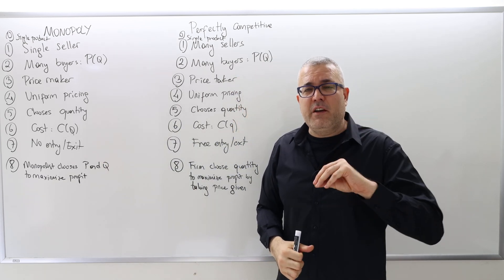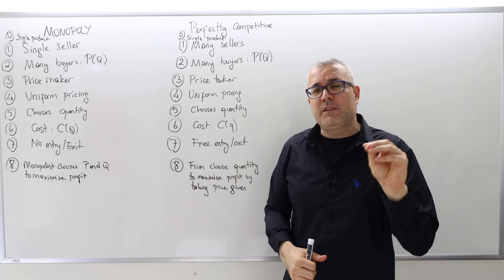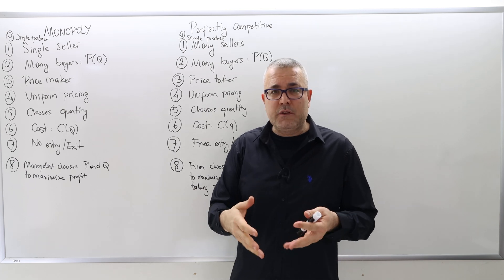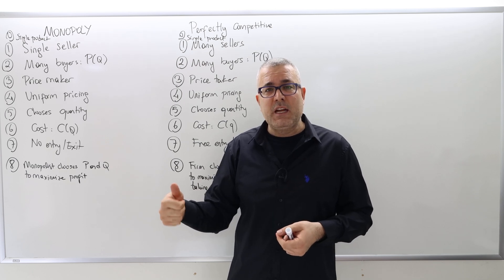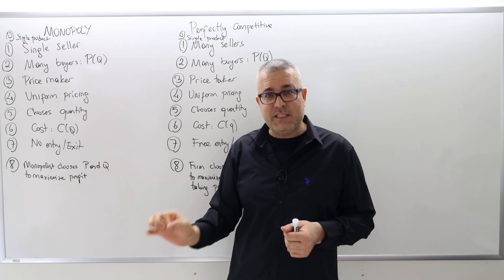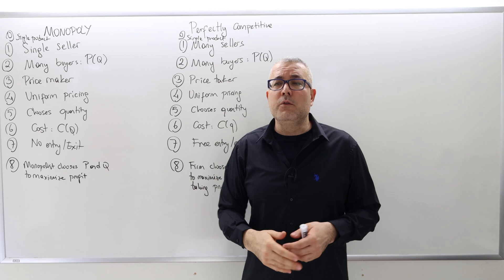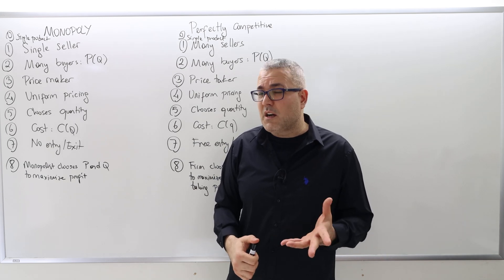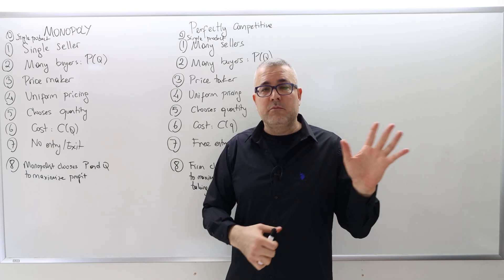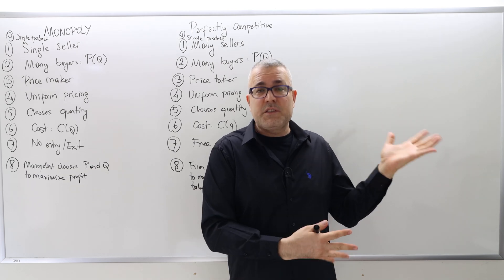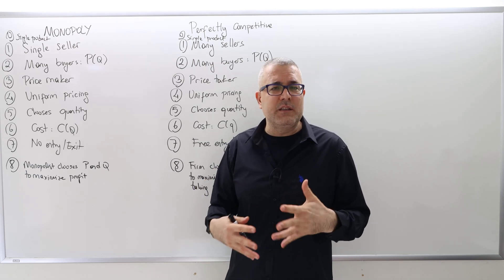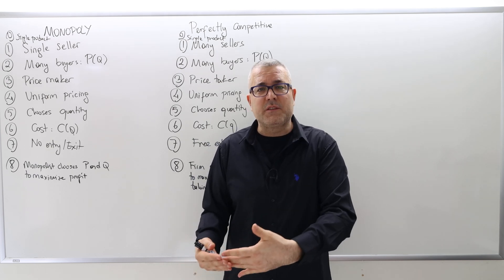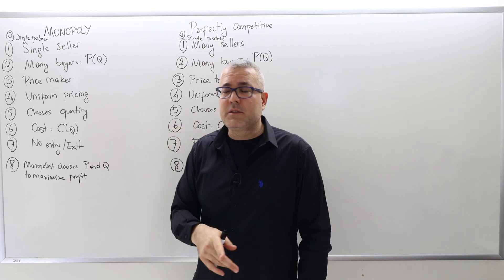Assumption four is uniform pricing, which is very important and will matter when we talk about price discrimination in chapter two. Uniform pricing means the monopolist sells the good to all customers at the same price — it cannot charge different prices to different customers. In reality this is not always the case; for example, when buying a used car or bargaining at a bazaar, different buyers can end up with different prices. In the perfectly competitive market, uniform pricing holds by default because the firm is a price taker and every consumer pays the same market price.